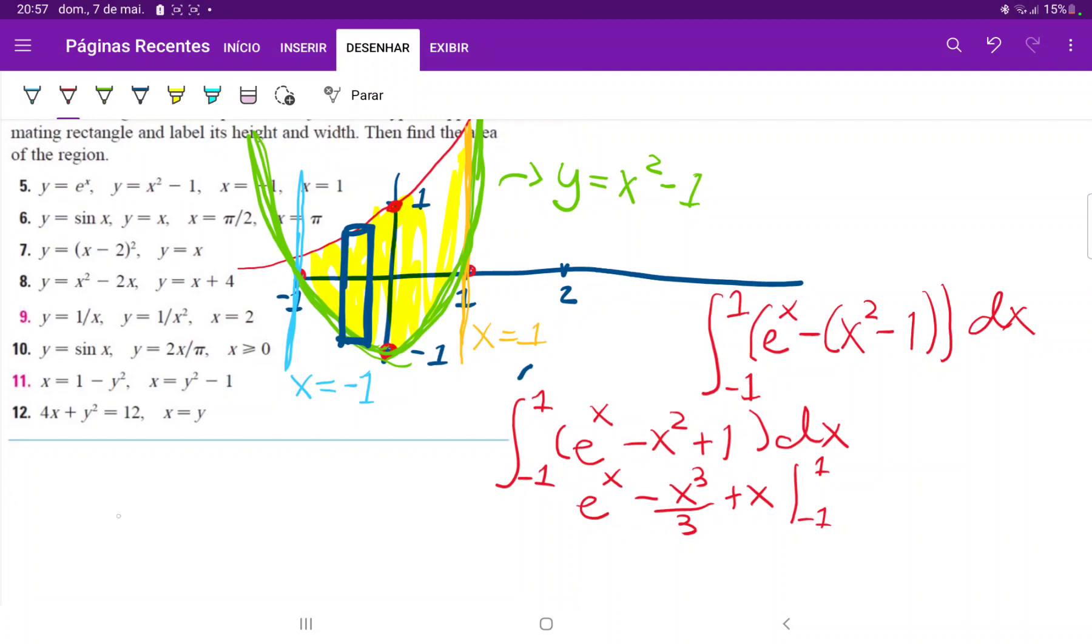We calculate our bounds. At the upper boundary: e minus one cubed over three (which is minus one third) plus one. Then minus the lower boundary: e to the -1, and minus negative one cubed over three is plus one third, minus x which is minus negative one.